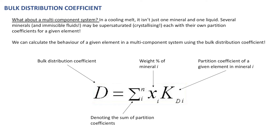For example, if an element is partitioning into pyroxene, we multiply the partition coefficient of that element for pyroxene by the weight percent of pyroxene in the system. That is applied to all components in the system, meaning we must have knowledge of the weight percent of the mineral and its partition coefficient to calculate bulk distribution coefficients.